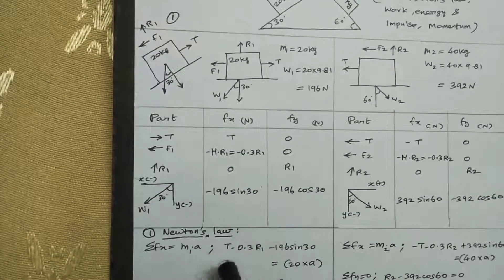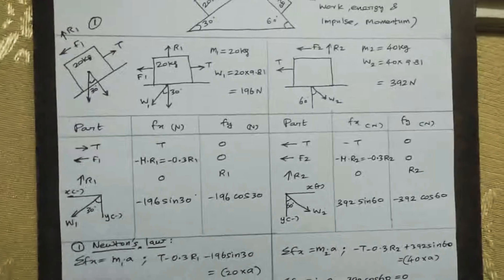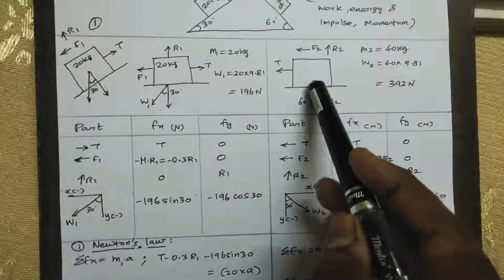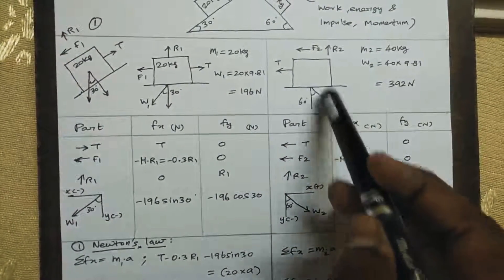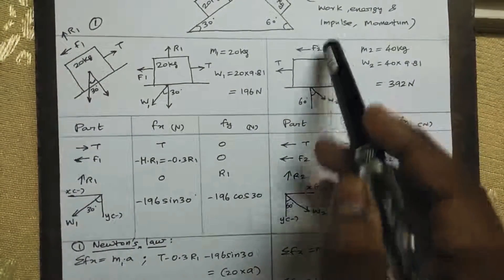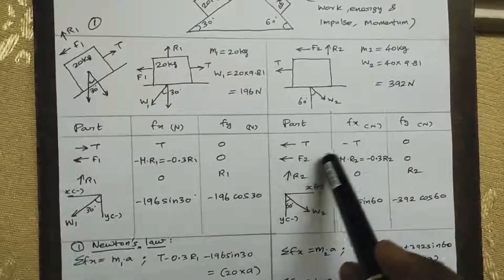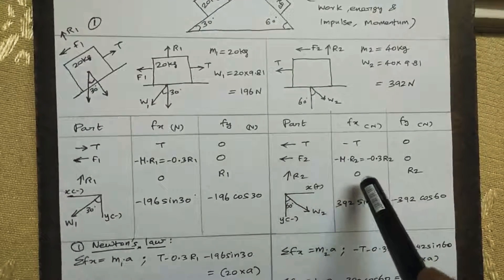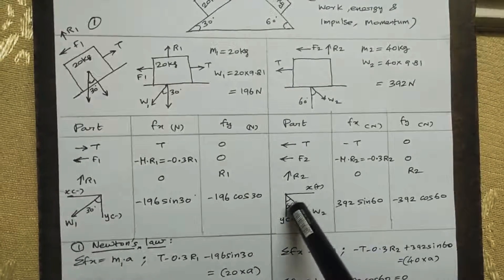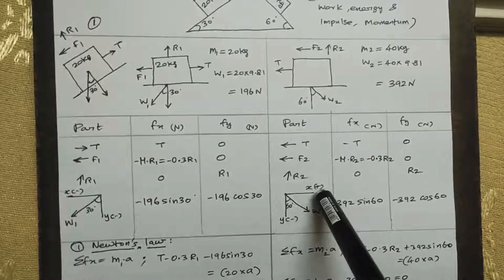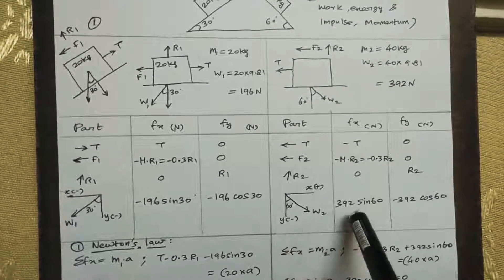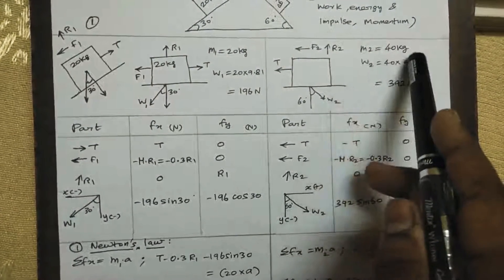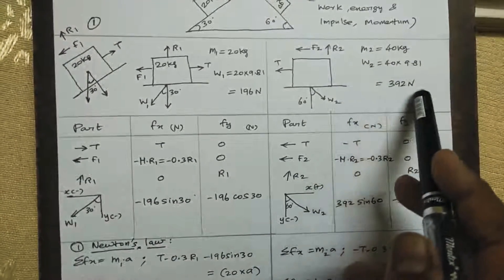Applying Newton's law for the second block: the tension acts in one direction, weight acts downward, friction force F2 acts opposing motion, and R2 acts upward. For the second block: minus T minus 0.3 R2 in x-direction; R2 upward; the y-component is minus 392 cos 60 and x-component is plus 392 sin 60. The value 392 comes from mass 40 kg times 9.81.